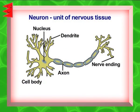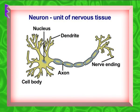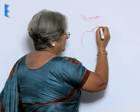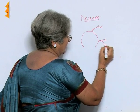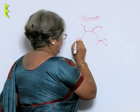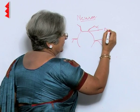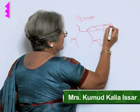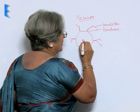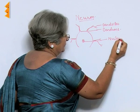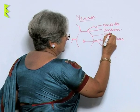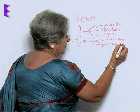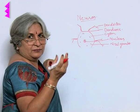The neuron has to have a structure which will help it to pick up the messages. For that purpose, it has a main cell body from which branches arise. These branches are called dendrons, and the dendrons are again branched to form dendrites. The main cell body is called the cytone. In the cytone there are special types of granules called Nissl granules, which become prominent on staining.